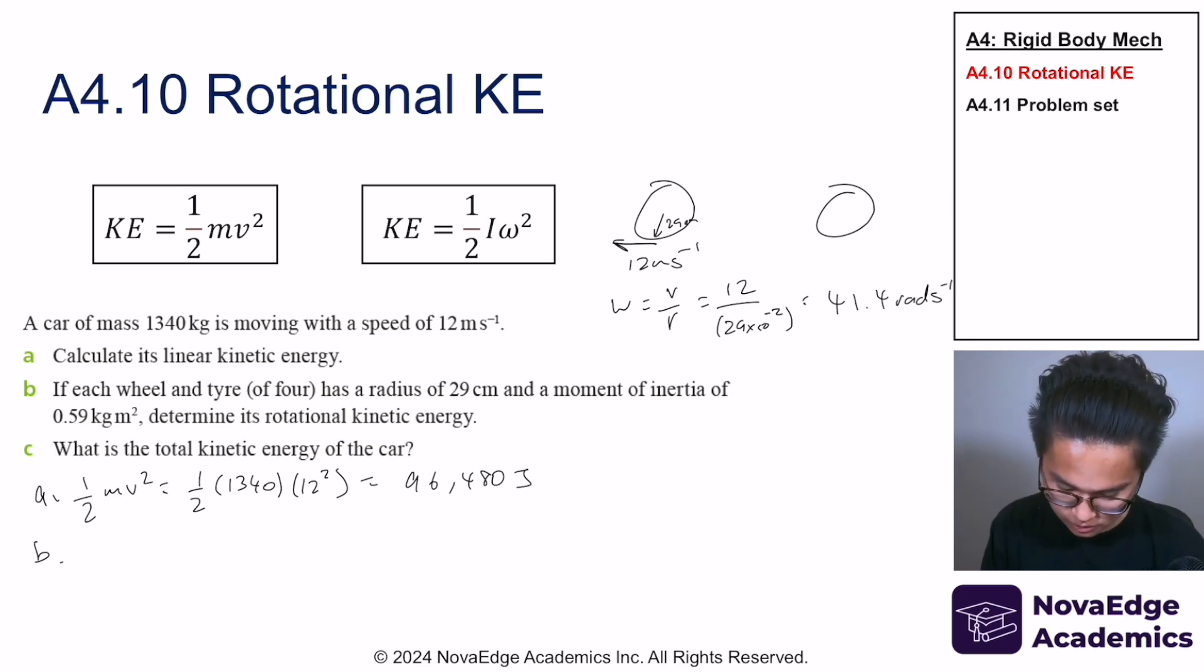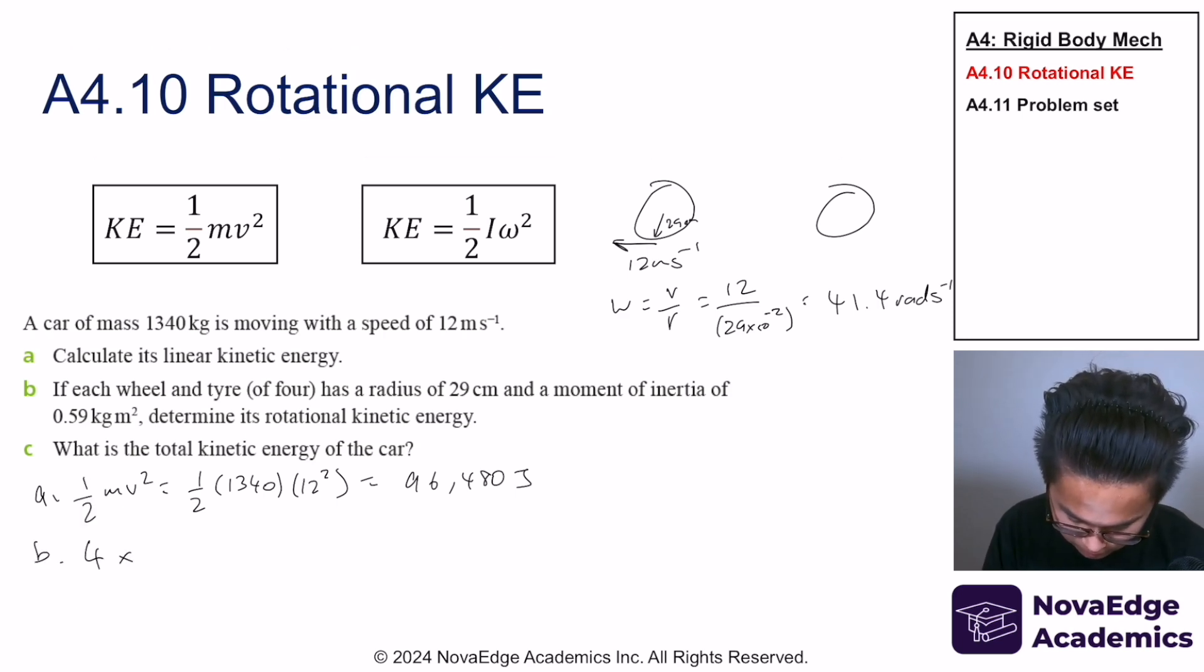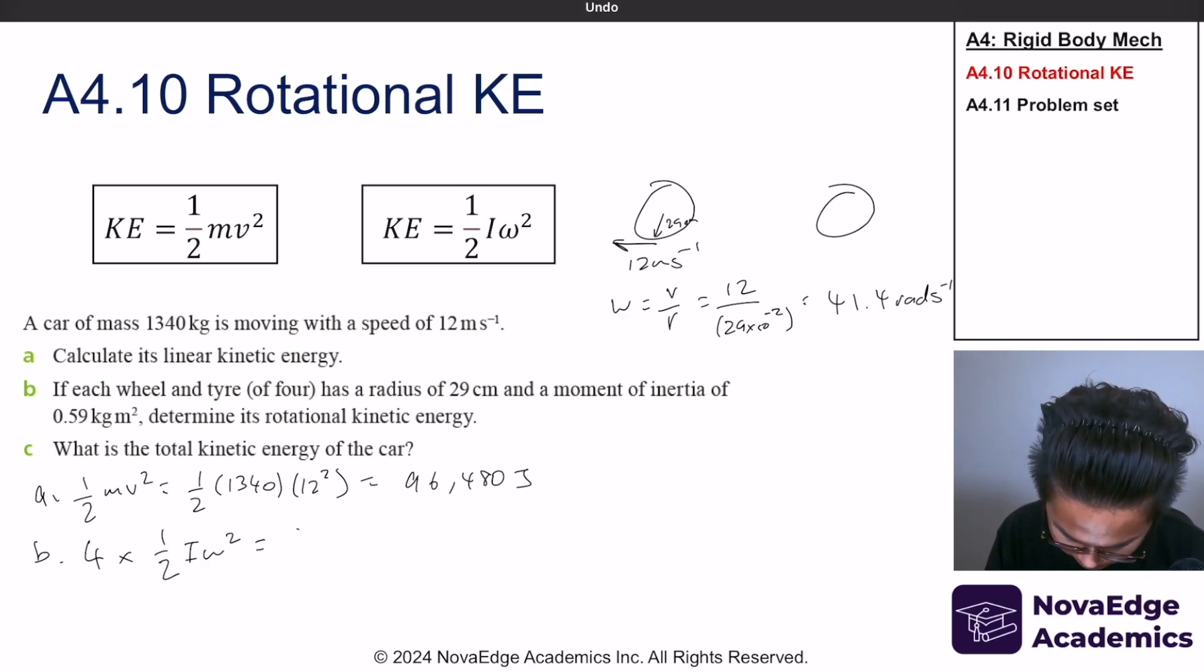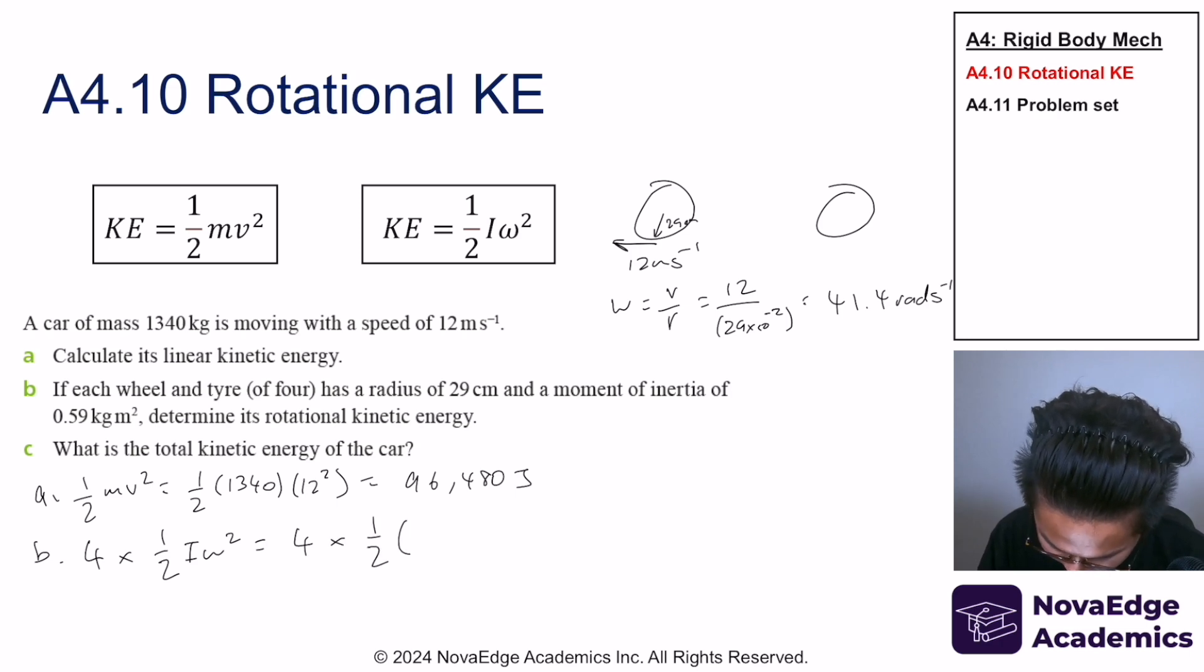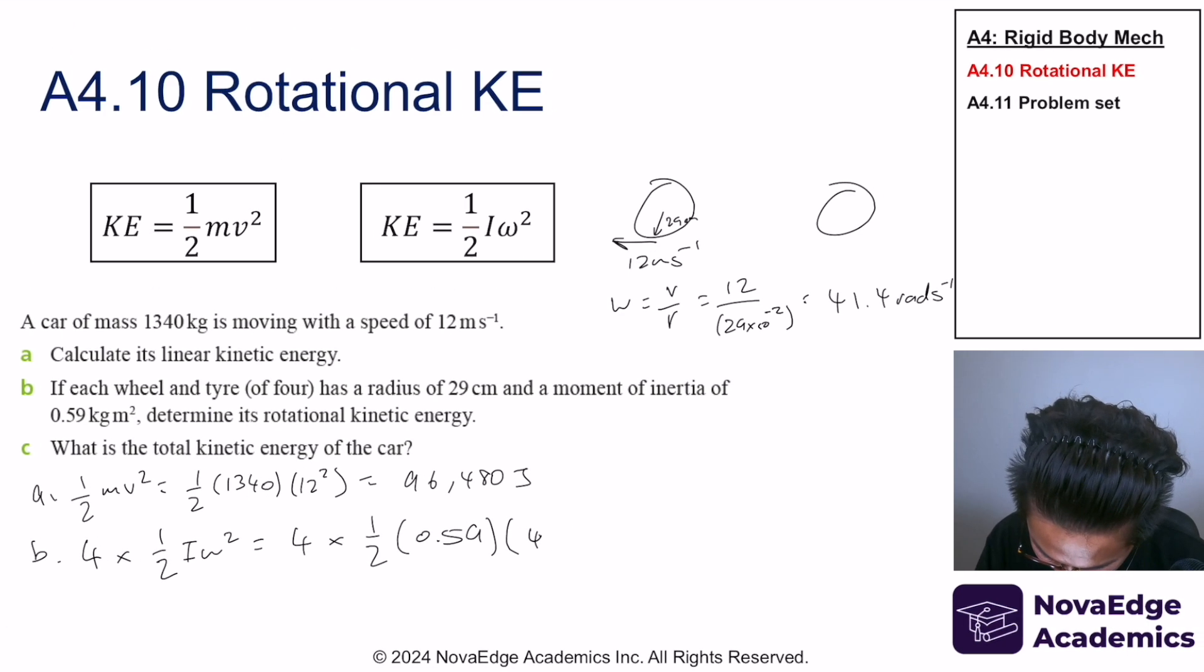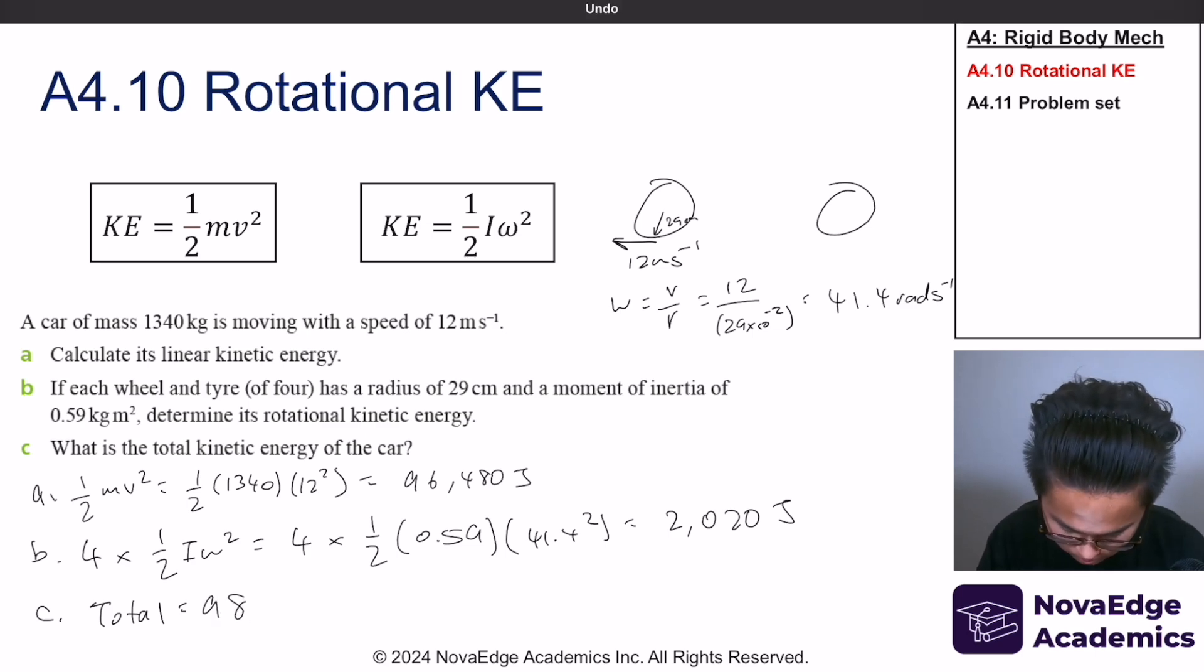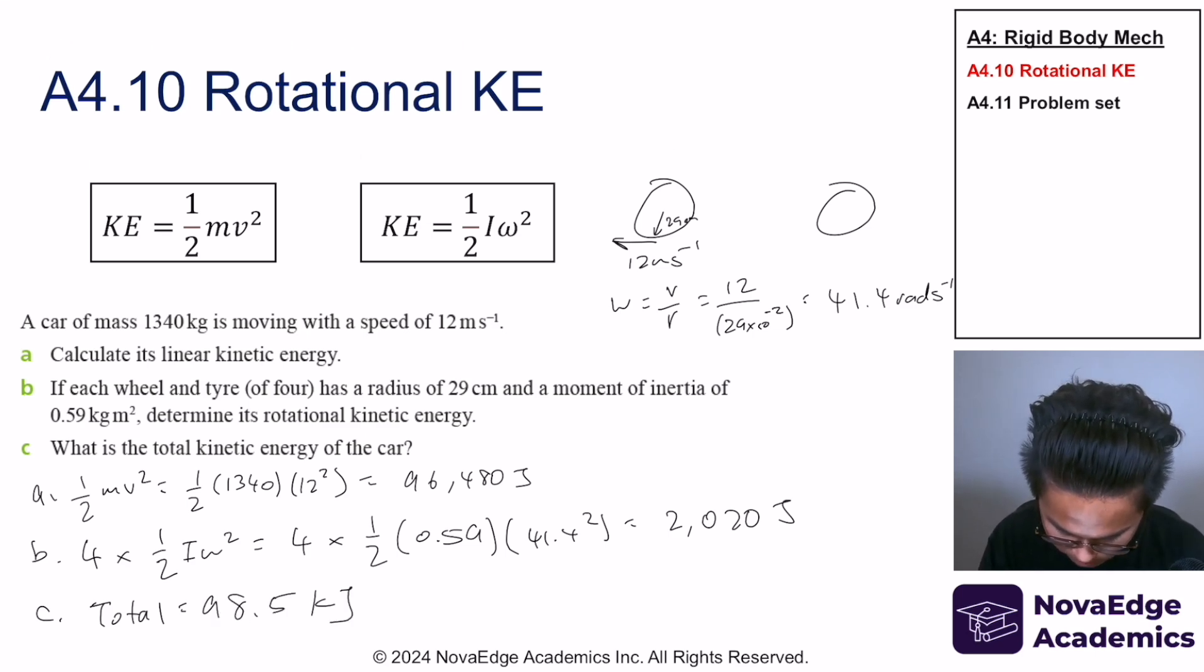So determine its rotational kinetic energy. Well, I have four wheels, so I'm going to multiply this by 1 over 2 iw squared, which is equal to 4 times 1 over 2, 0.59, 41.4 squared, which is equal to 2020 joules. So the total is going to be equal to 98.5 kilojoules.